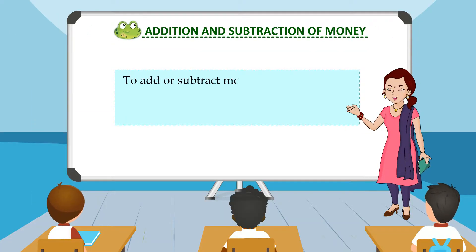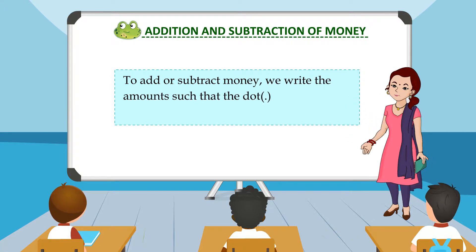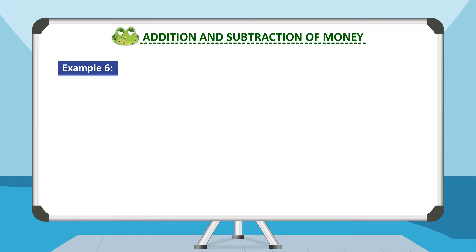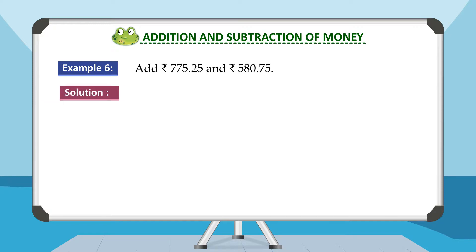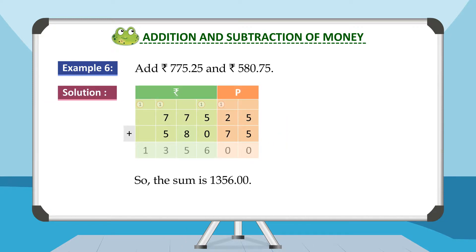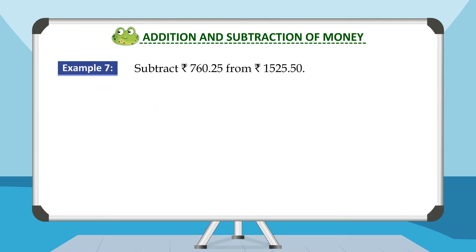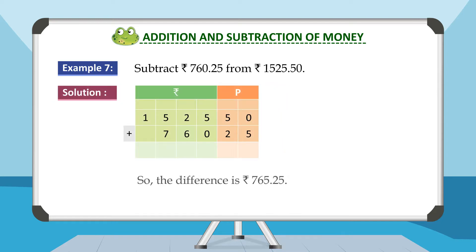Addition and Subtraction of Money. To add or subtract money, we write the amounts such that the dot separating the rupees and paise in each amount is in line. Example 6: Add rupees 775 and 25 paise and rupees 580 and 75 paise. Solution: The sum is rupees 1356 and 0 paise. Example 7: Subtract rupees 760 and 25 paise from rupees 1525 and 50 paise. Solution: The difference is rupees 765 and 25 paise.